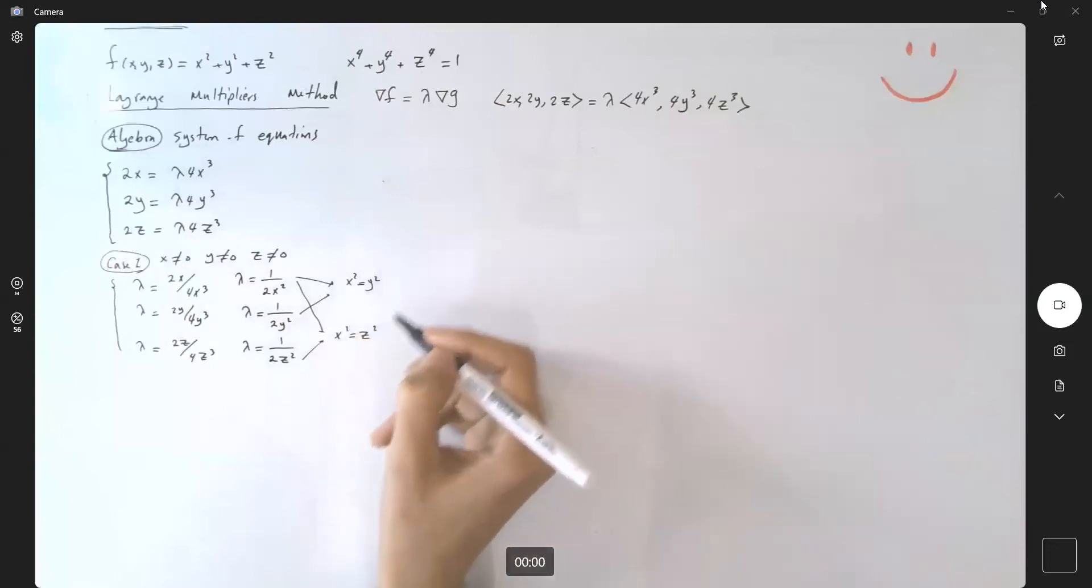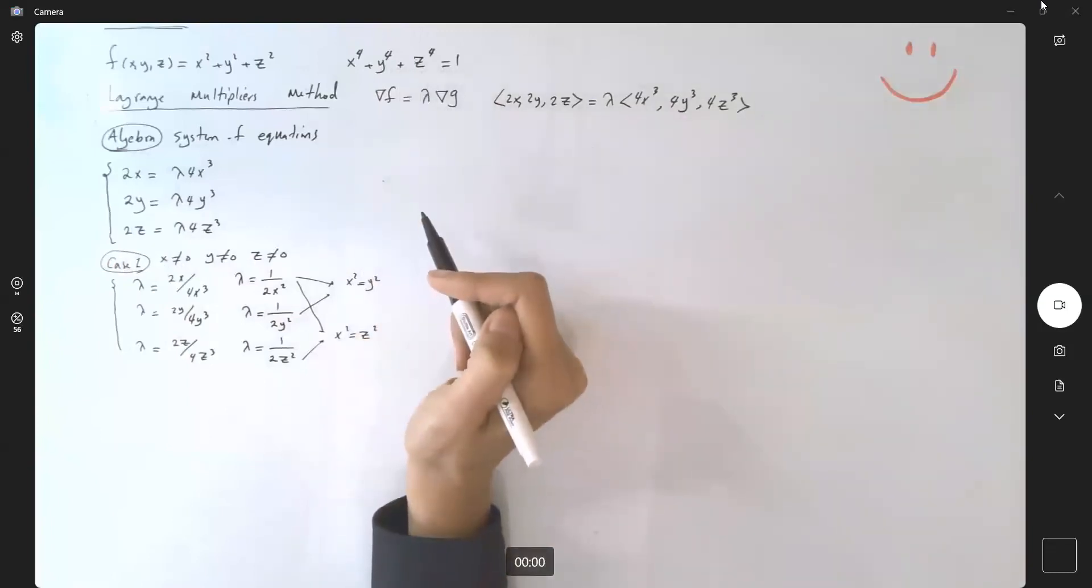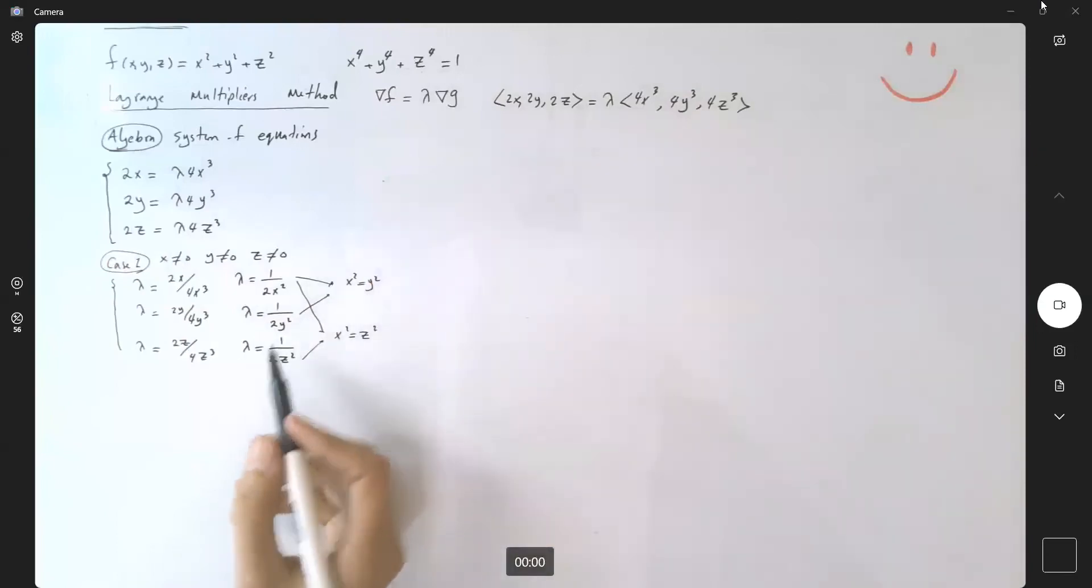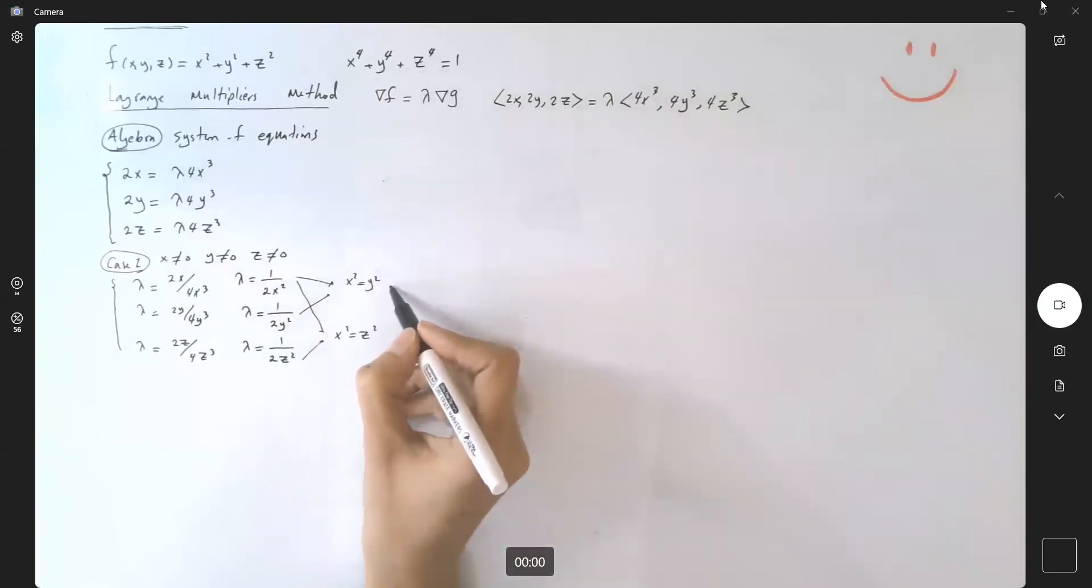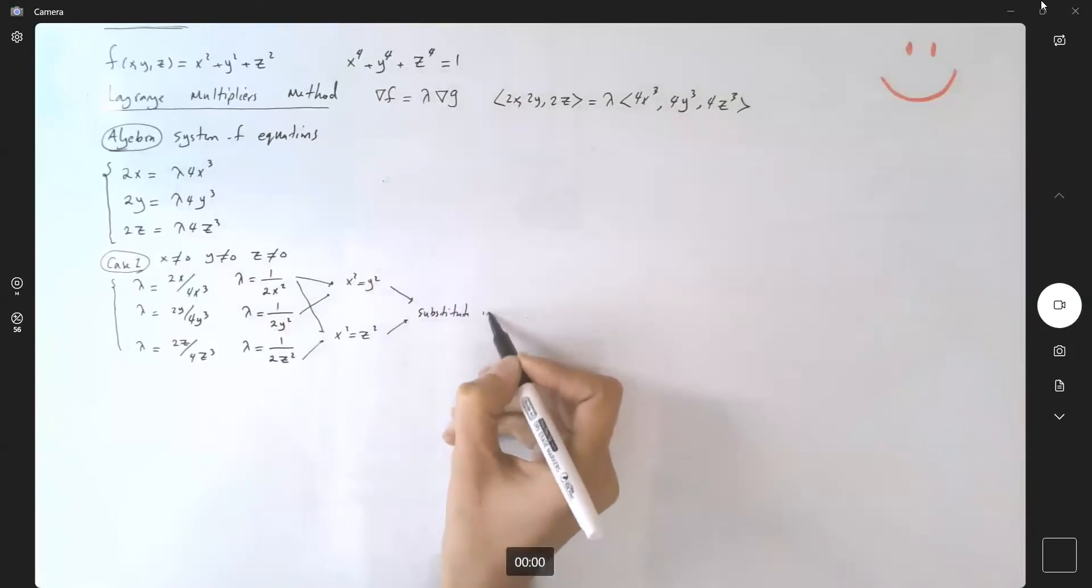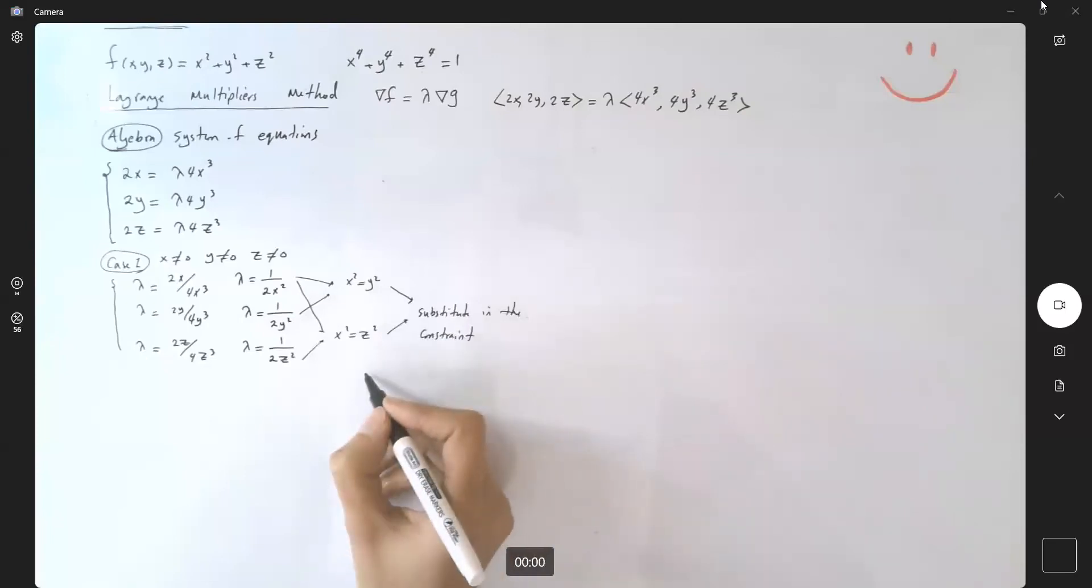We're going to use these relations and the constraint to find the missing values. Substitute into the constraint: x^4 + y^4 + z^4 becomes x^4 + x^4 + x^4 = 1, or 3x^4 = 1, so x^4 = 1/3, or x = ±(1/∜3).